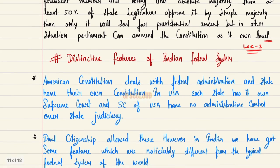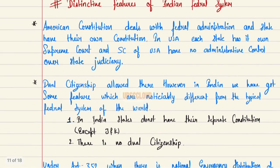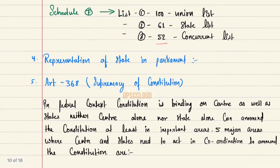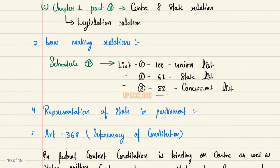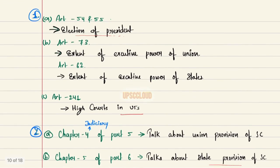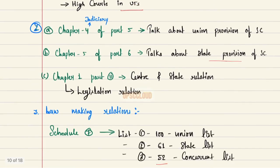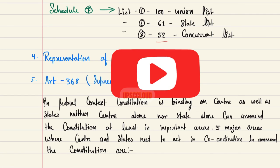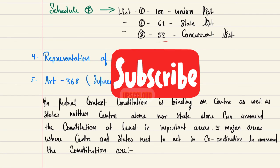We will see Lecture Three on the distinctive features of the Indian federal system. These are the five points of power where the center and state need to enact in coordination to amend the constitution. Thank you.